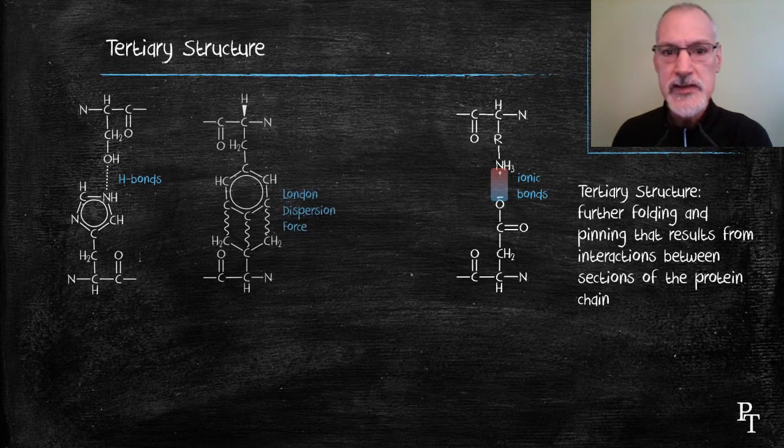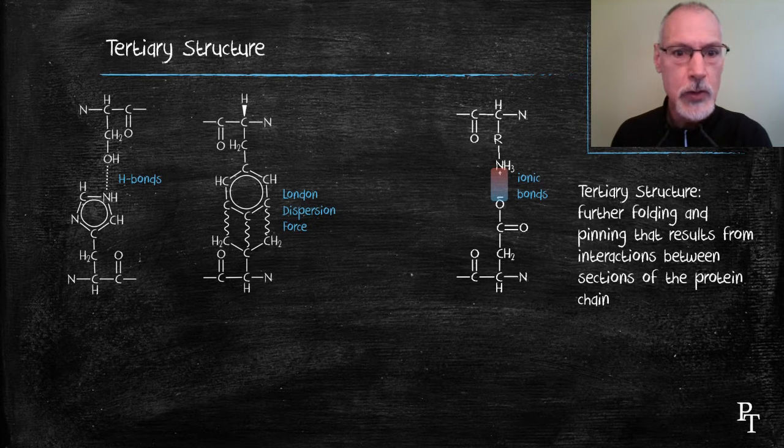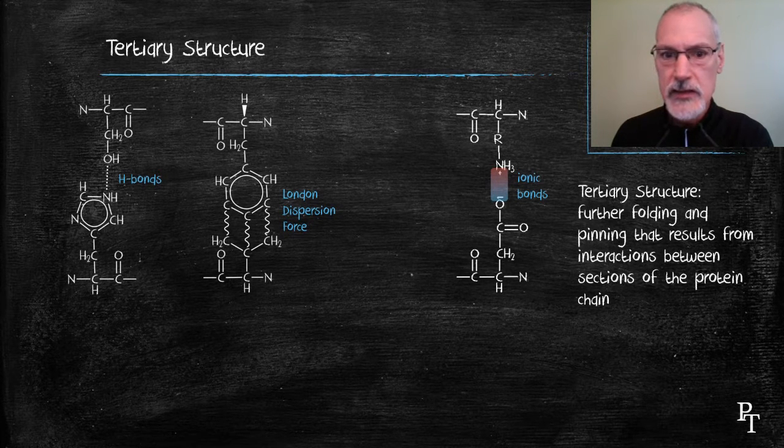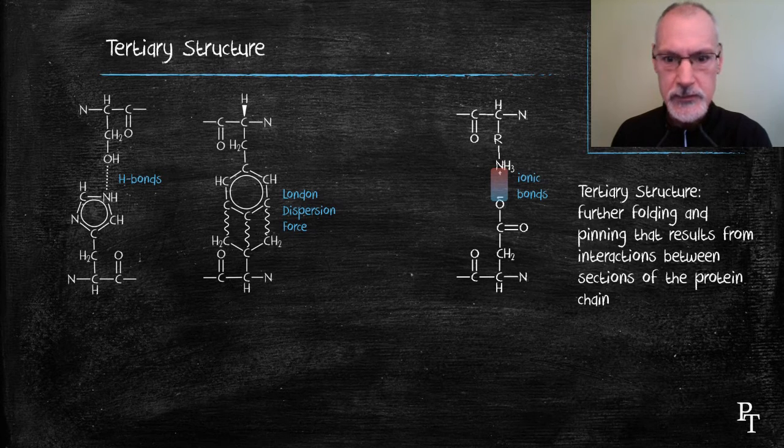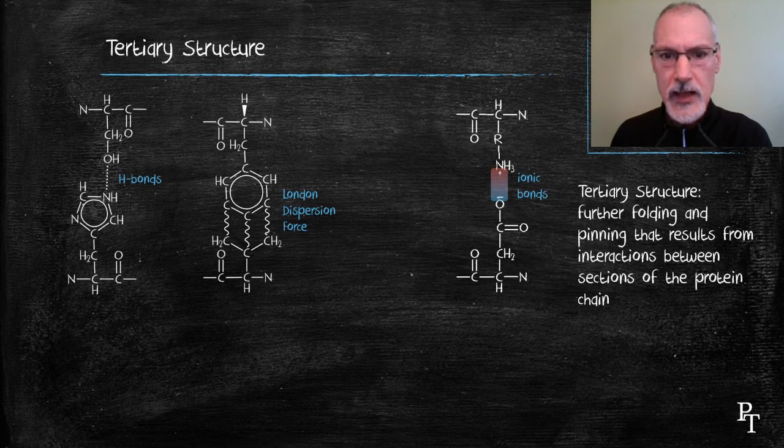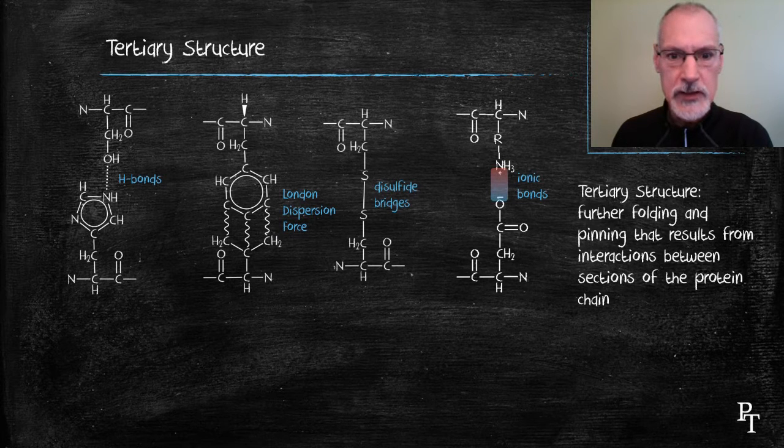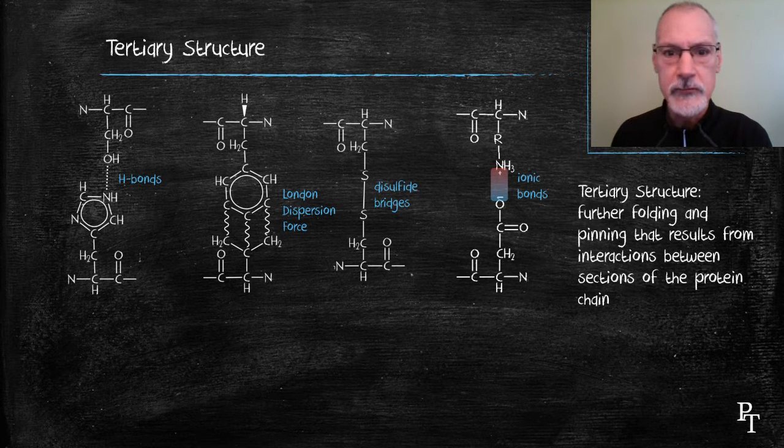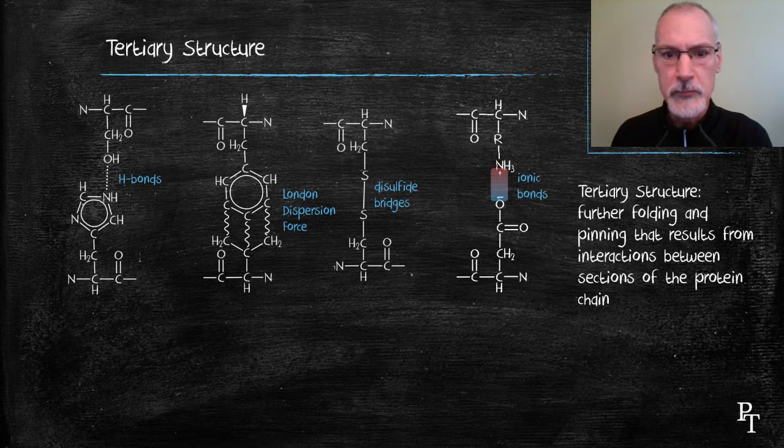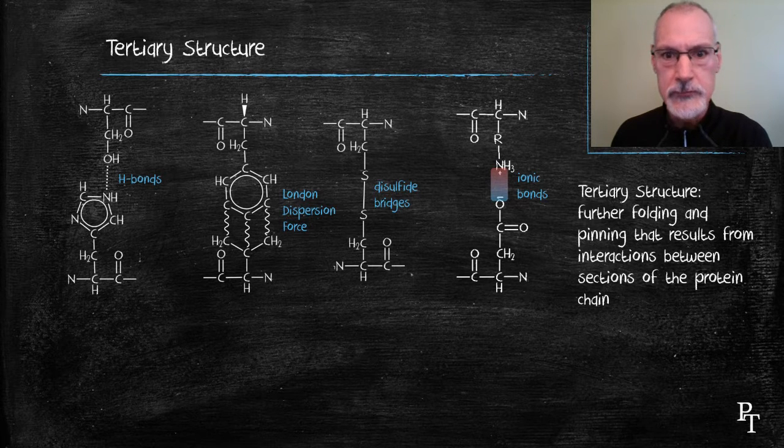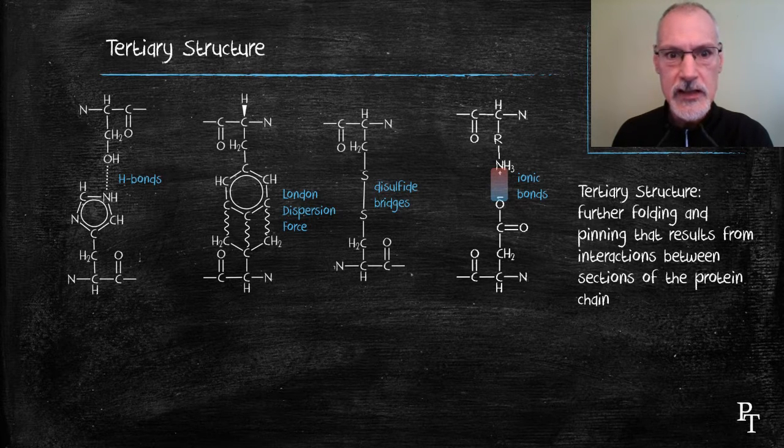You can also get London dispersion forces happening between non-polar sections of our chain. These are sometimes called hydrophobic interactions. And we can actually get covalent bonds happening between cysteine amino acids. They form what's called a disulfide bridge, a covalent bond that exists between the sulfurs when you remove the hydrogens and the cysteine amino acid.